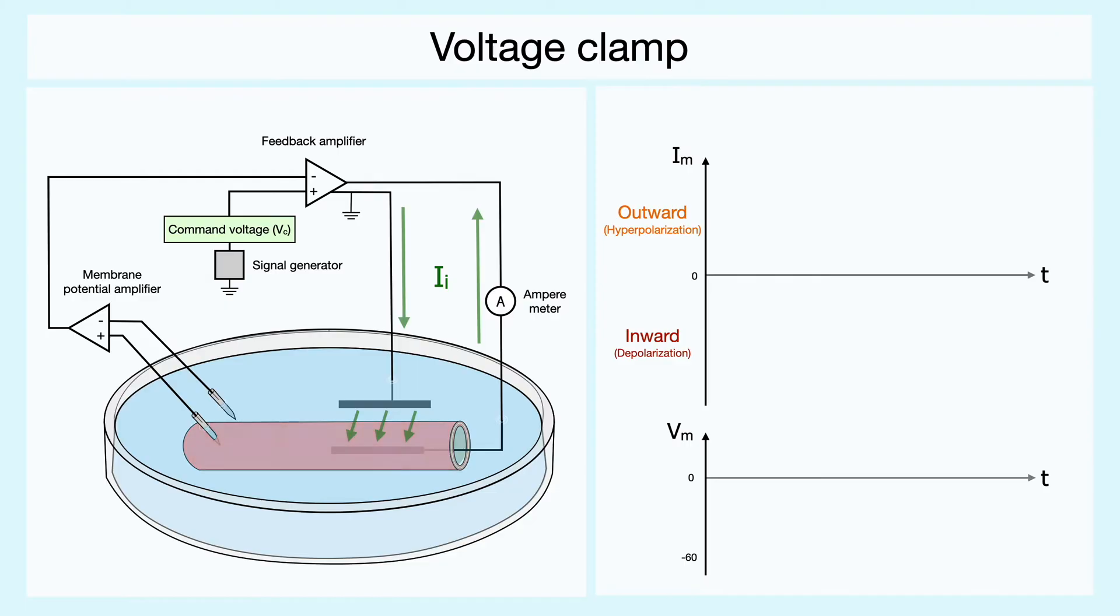Alright, now for the third trial, let's induce a very big depolarization by setting the command potential at 0 mV. You can see that now the results are very different from what happened before. Nonetheless, here again, as the membrane potential equilibrates, there is a brief capacitive current that is recorded.